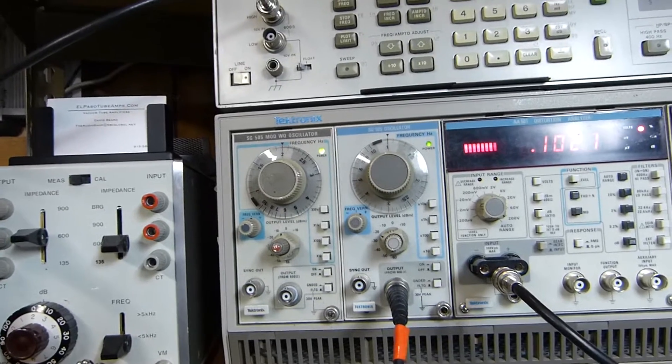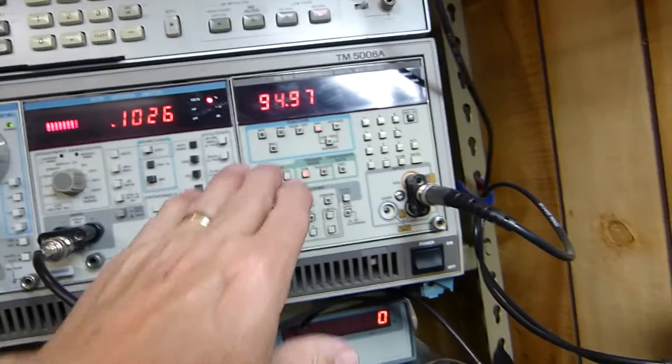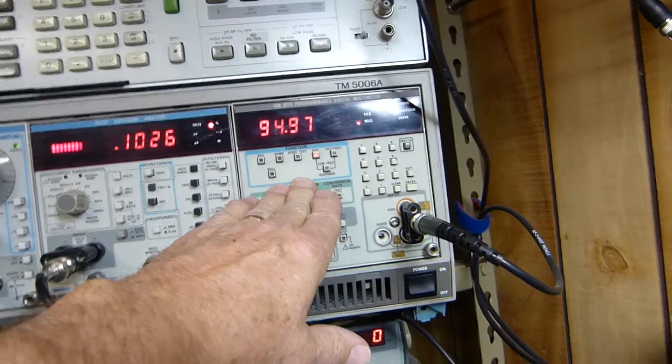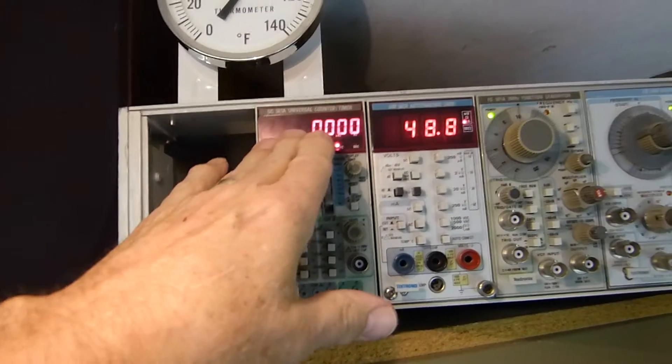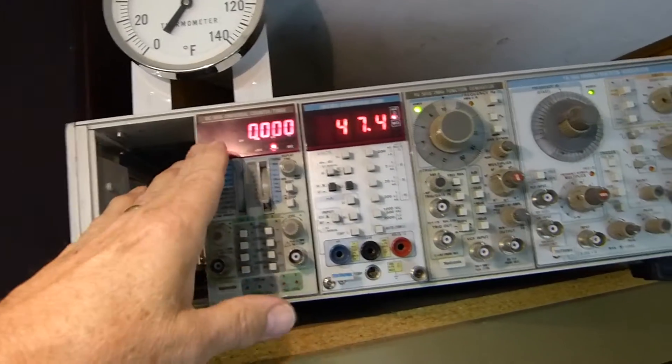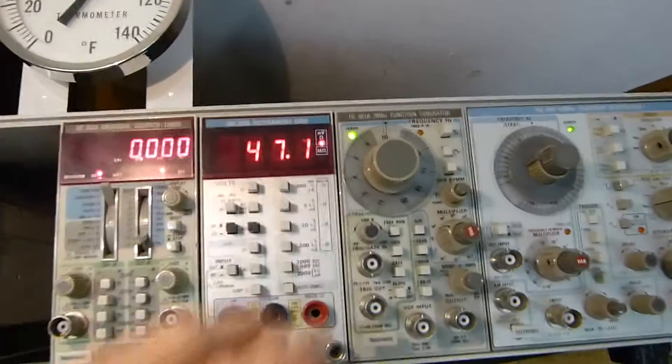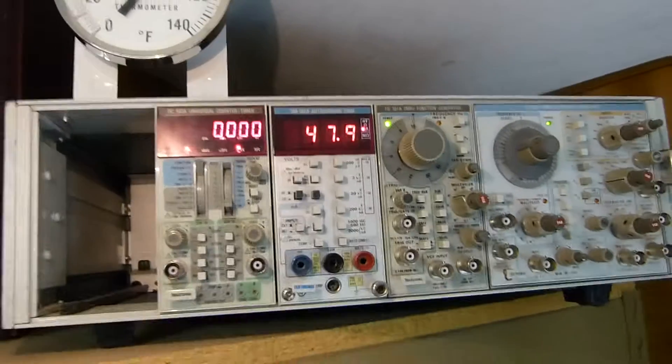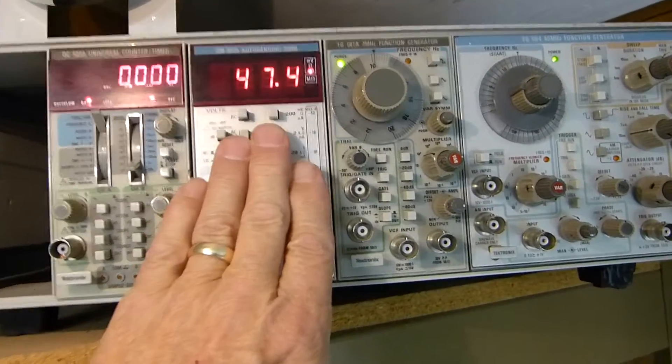These meters - all I use this one for is just a voltmeter and digital counter. I hardly use that anymore. This little digital meter DM 502A is actually really nice.